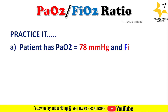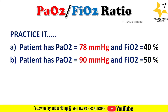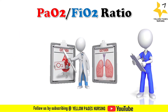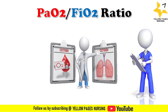Here are a few examples for your practice. Patient one has a partial pressure of oxygen of 78 mmHg and FiO2 of 40%. Patient two has a partial pressure of oxygen of 90 mmHg and FiO2 of 50%. You can practice and mention the answers in the comment box.